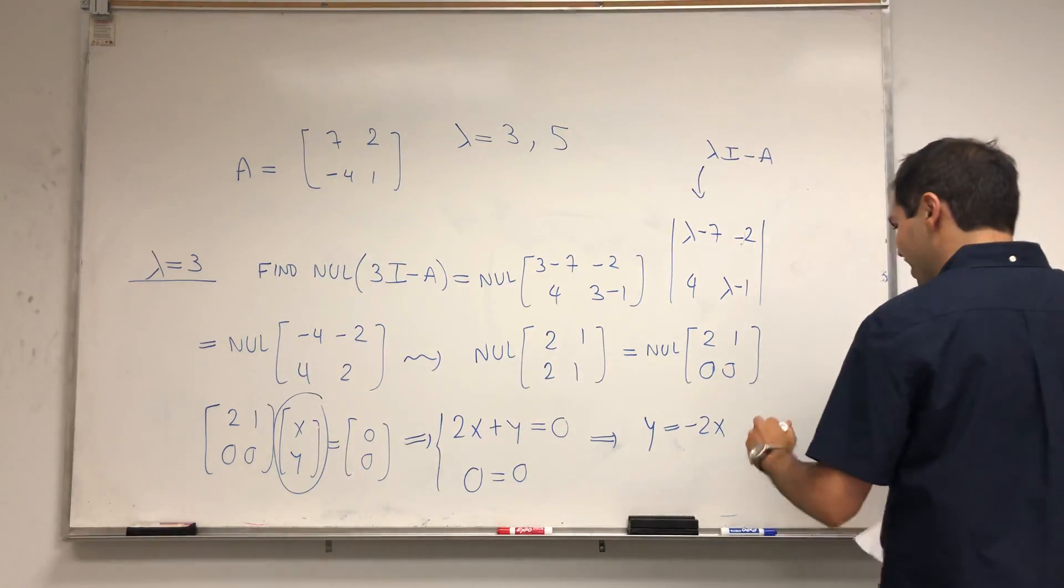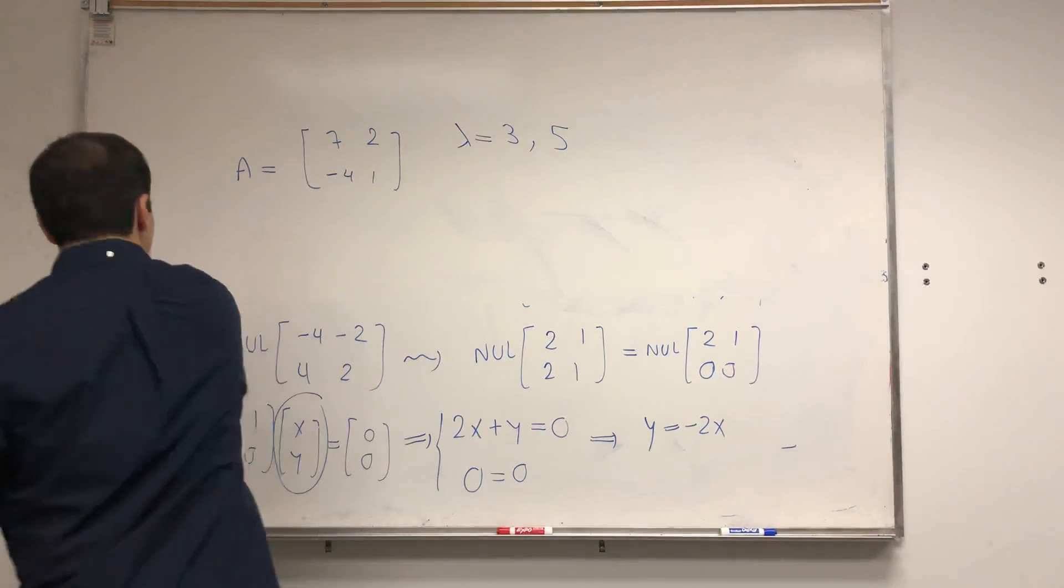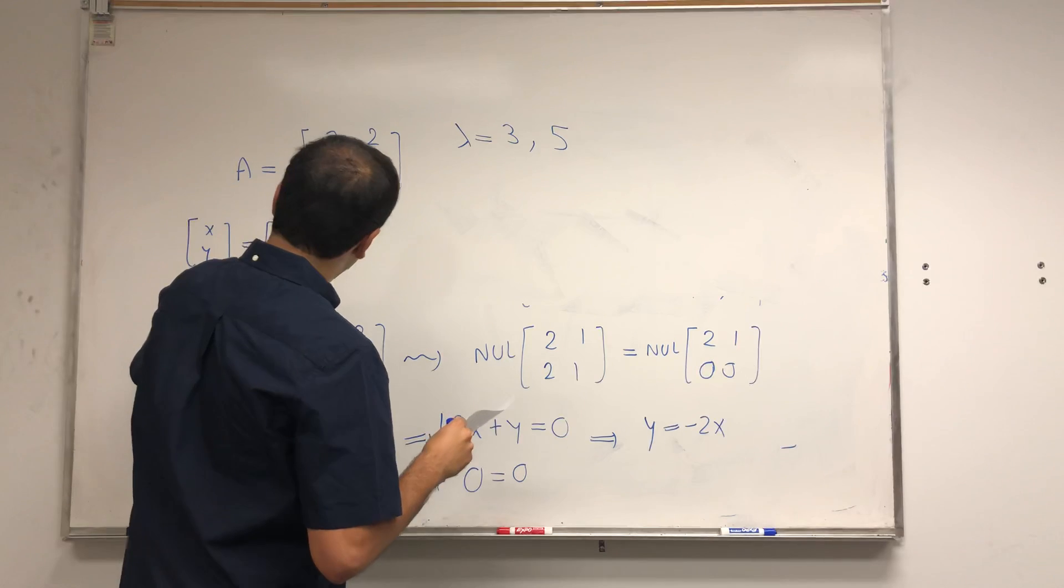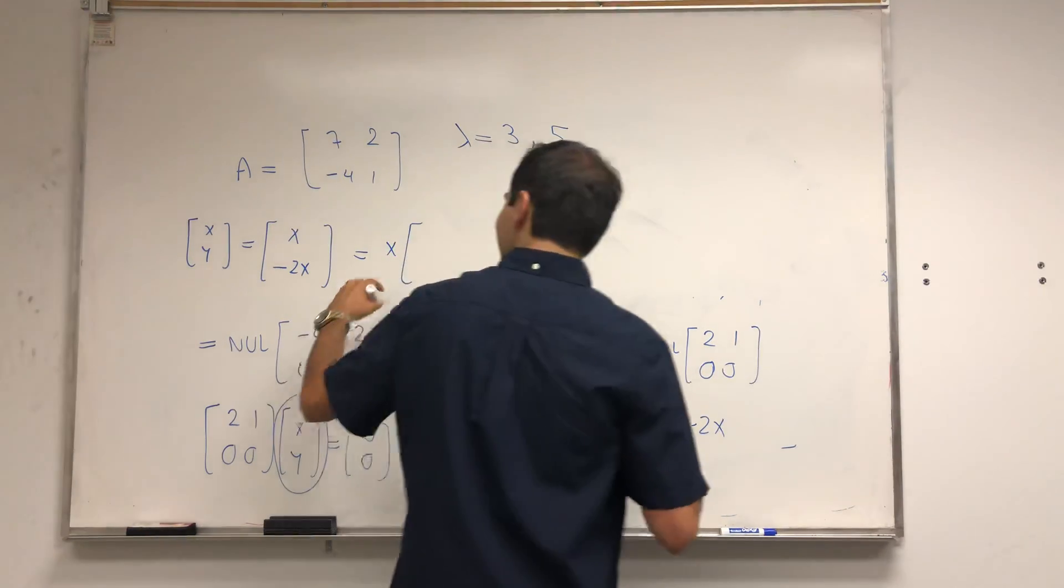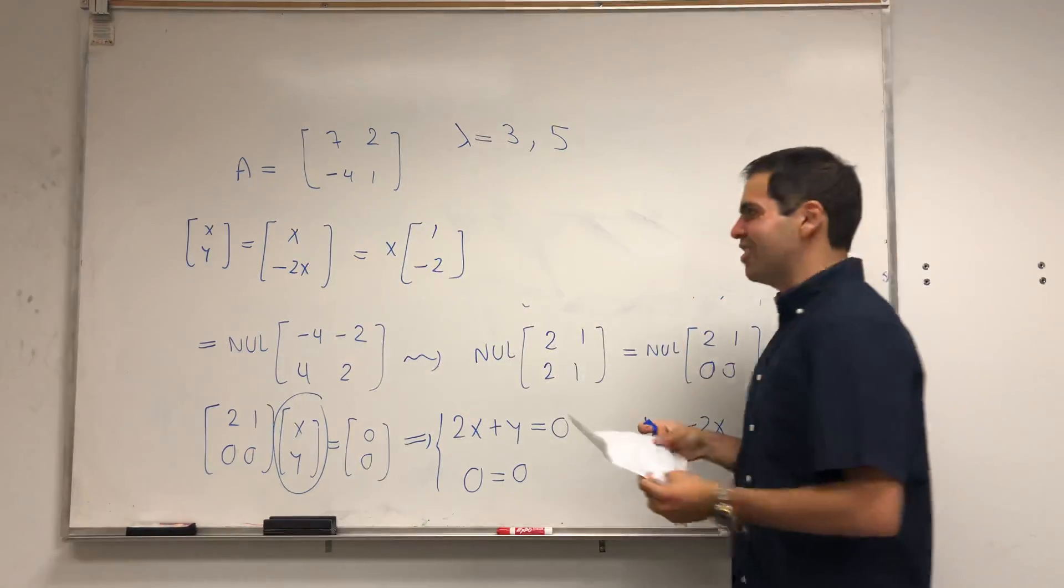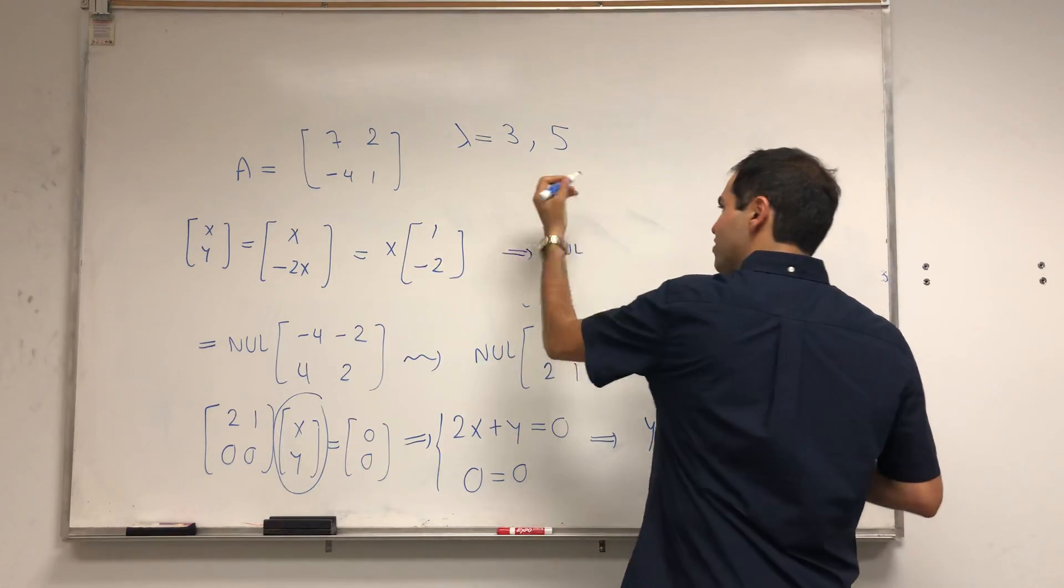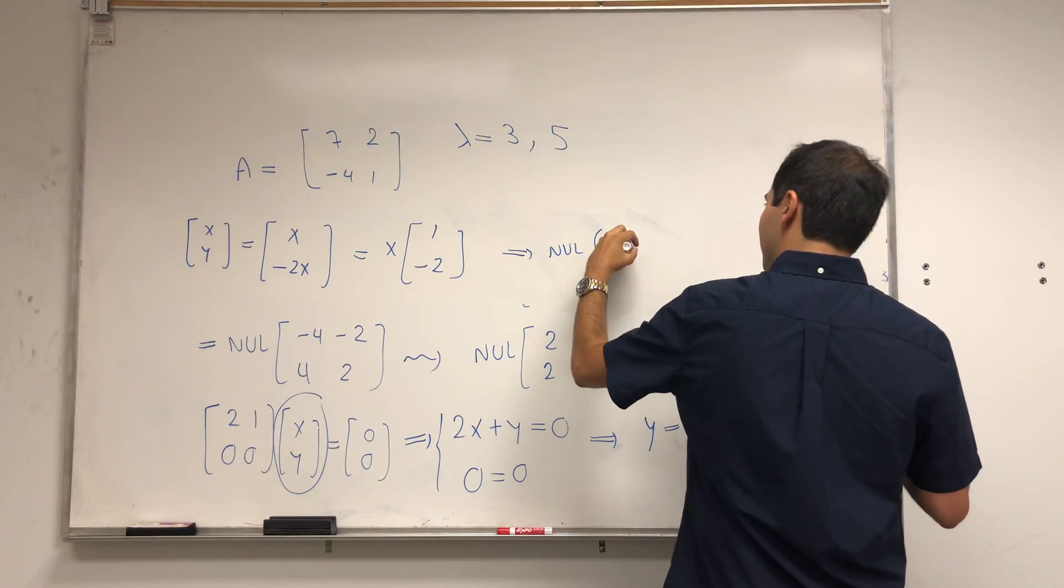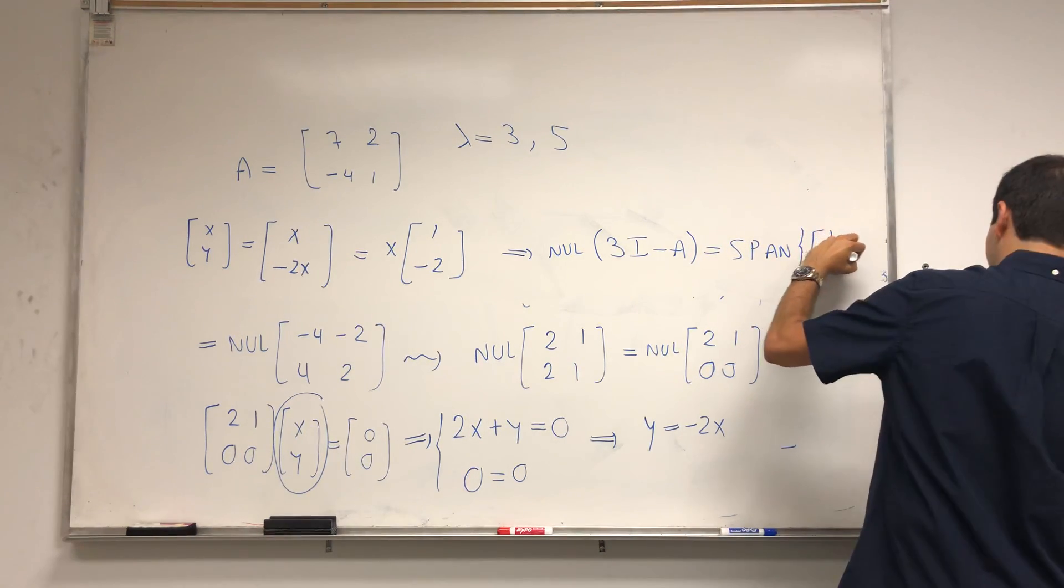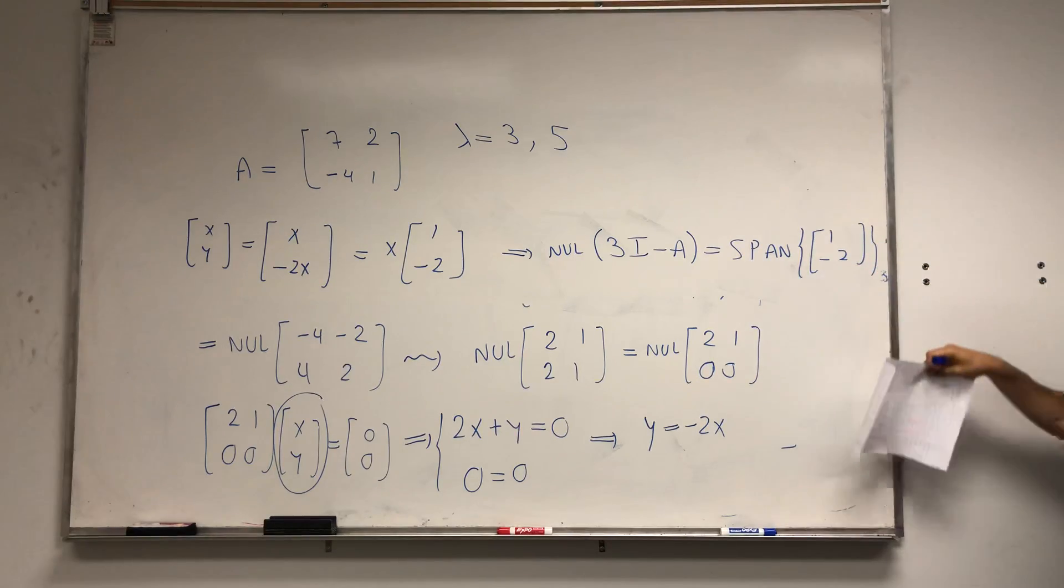This gives you 2x plus y equals 0, and 0 equals 0, which is not very interesting. This gives you y equals minus 2x. And remember, you want to find xy. So xy equals x and minus 2x, but this is the same as x times 1 minus 2. Because x was arbitrary, this tells you that the null space is just the span of 1 minus 2. In other words, the eigenvectors corresponding to 3 is just 1 minus 2.